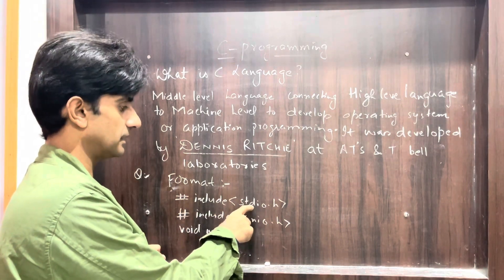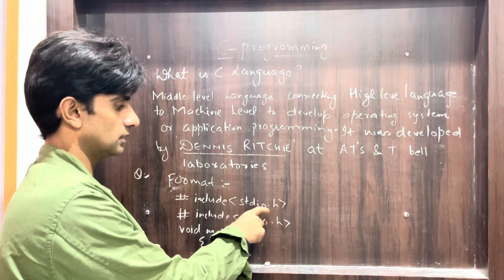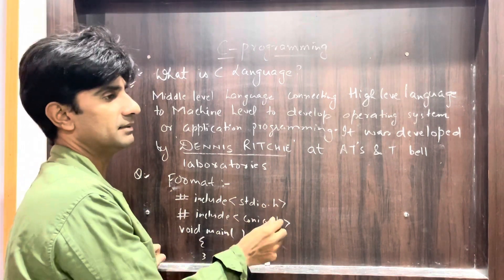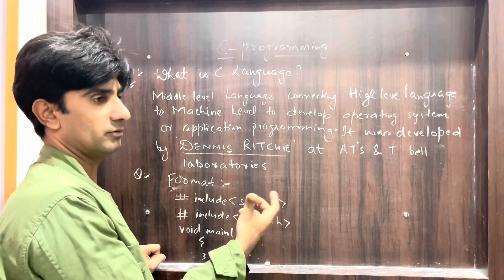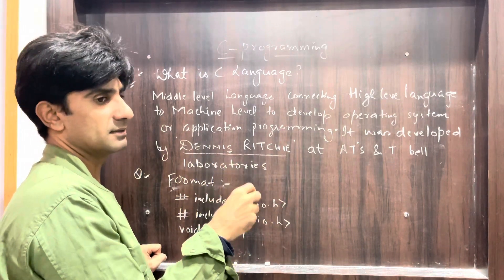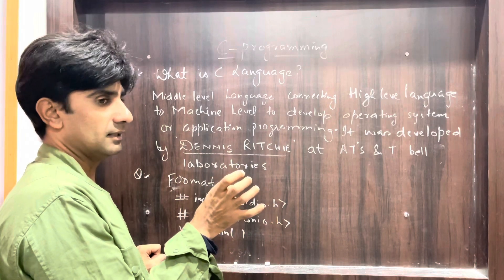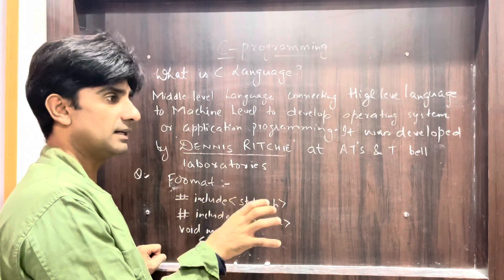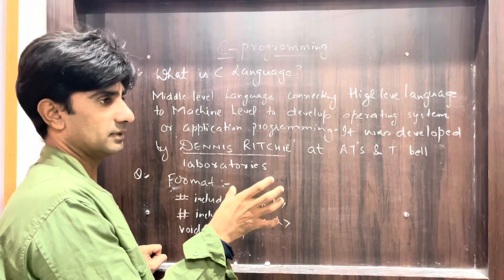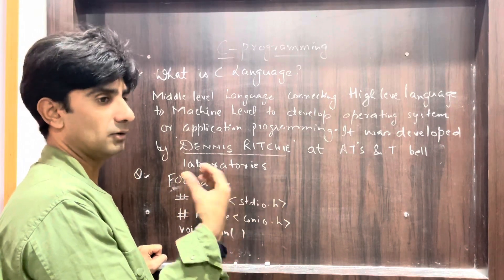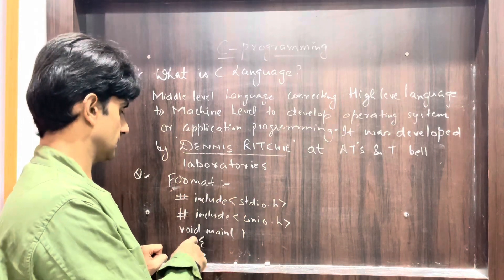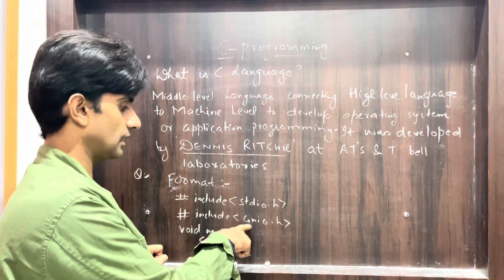stdio.h stands for standard input/output — 'h' means header file. This contains the predefined functions of C programming, meaning there are certain functions already in this directory which the compiler will recognize and understand.